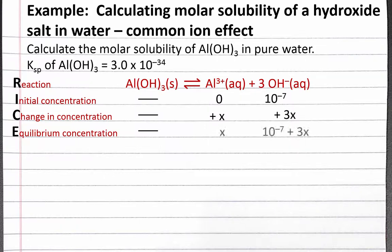At equilibrium, our concentration of aluminum will be x, and our concentration of hydroxide will be 10 to the negative 7th plus 3x. For our equilibrium constant expression, the equilibrium constant equals the concentration of our products raised to the power of their coefficients, divided by the concentration of our reactants raised to the power of their coefficients. Since our reactant is a solid, it doesn't appear in the expression. Our Ksp expression is the concentration of aluminum ions times the concentration of hydroxide ions cubed.